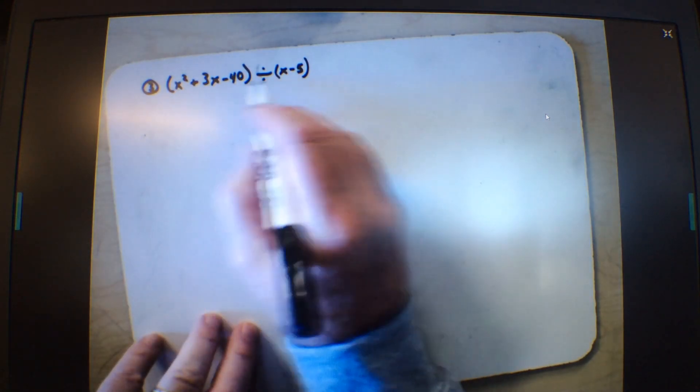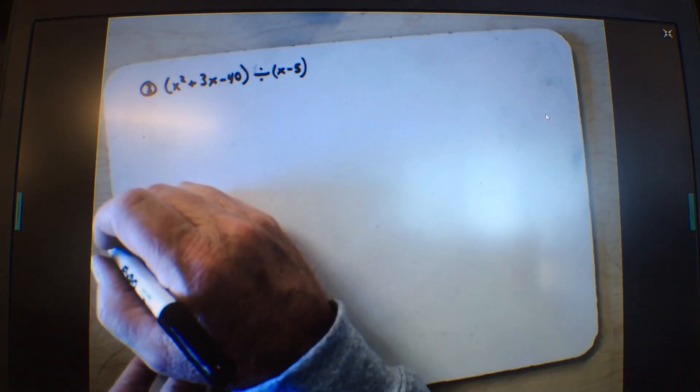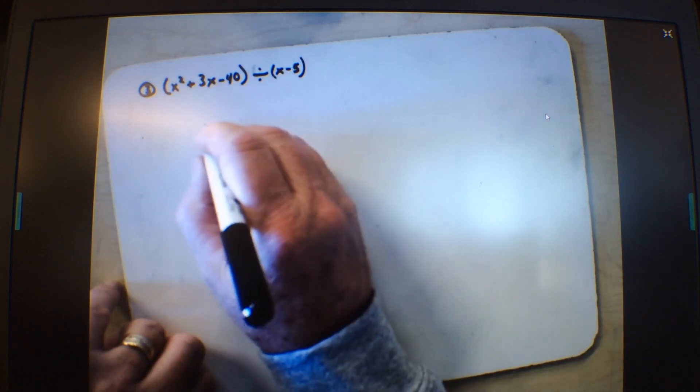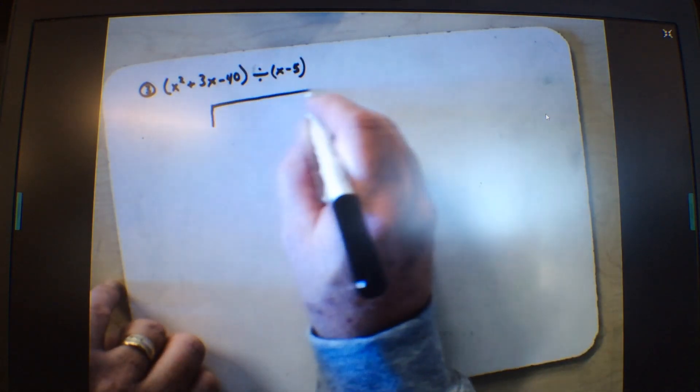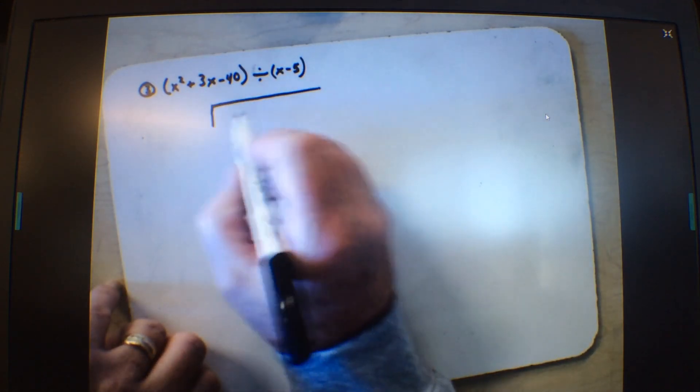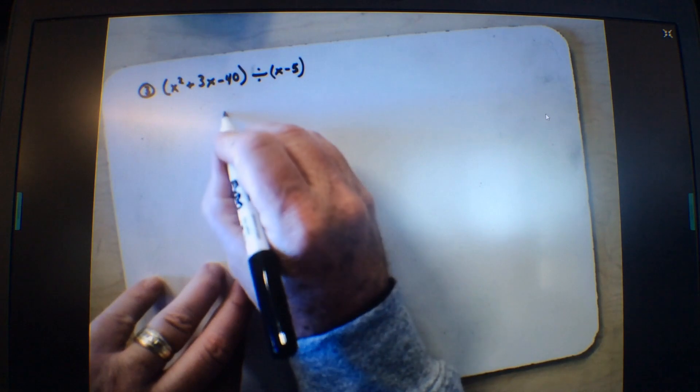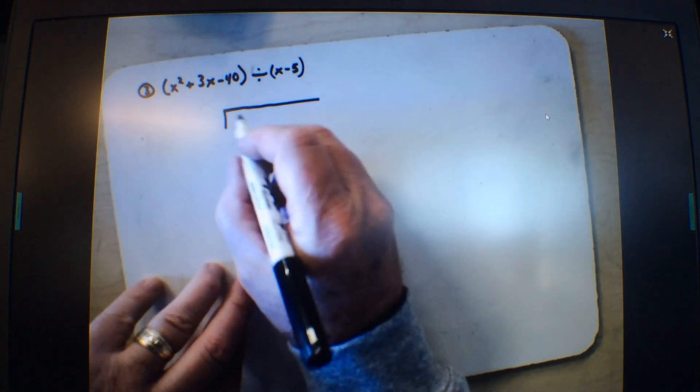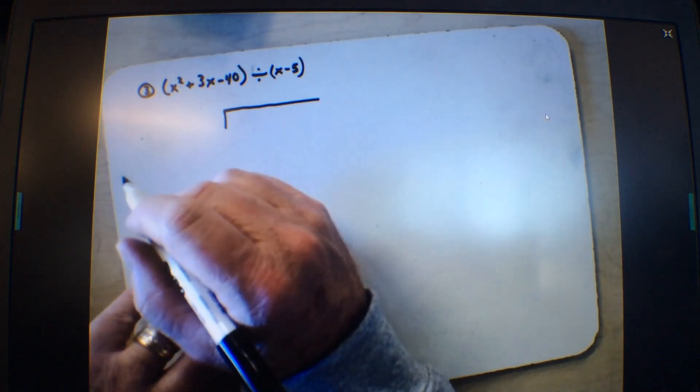We have a polynomial divided by a polynomial. So, what I'm going to do is I'm going to show you long division. I'm going to put this underneath the box. I'm going to erase and try that again, give myself a little bit more room. Now, this is in decreasing order of x, correct?